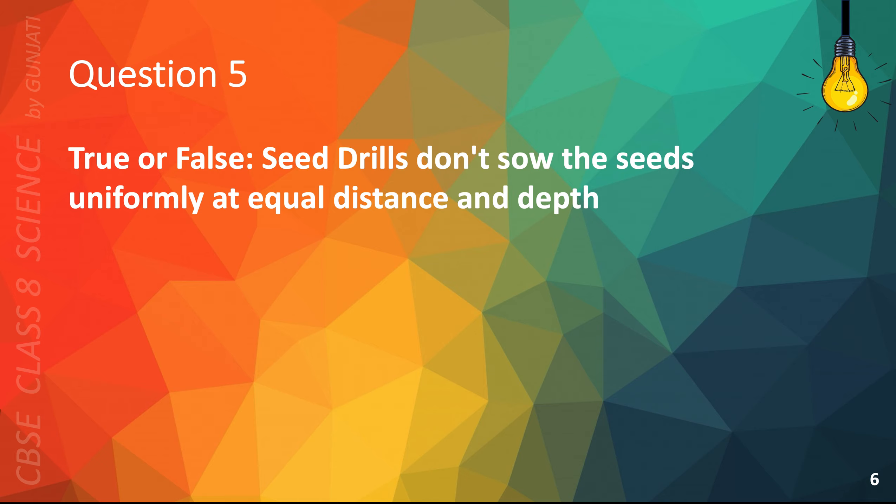Question 5. True or false. Seed drills don't sow the seeds uniformly at equal distance and depth. The correct answer is B false.